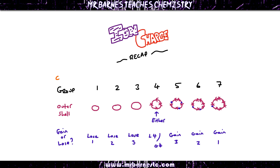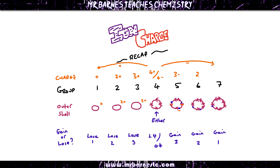Once you know whether an element wants to lose or gain electrons, and how many, remember that everything that loses electrons becomes positive, and everything that gains becomes negative — and the charge is just how many it loses or gains. So group 1 loses 1, becomes +1. Group 2 loses 2, becomes 2+. Group 3 loses 3, becomes 3+. Group 4, if it loses, becomes 4+; if it gains 4 electrons, it becomes 4−; gains 3 electrons: 3−; gains 2 electrons: 2−; gains 1 electron: 1−.